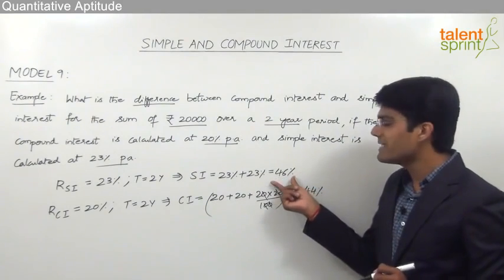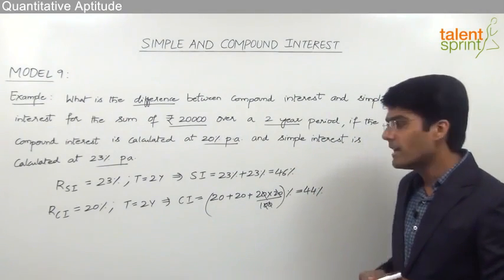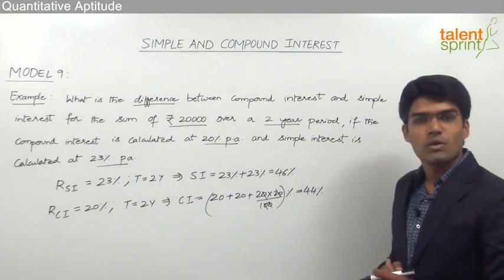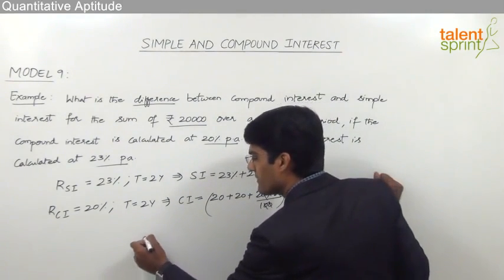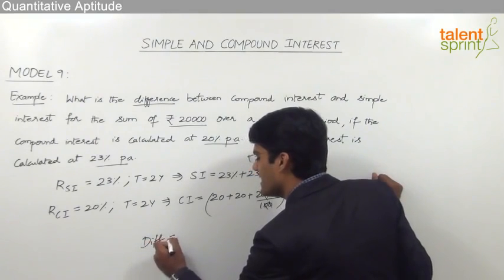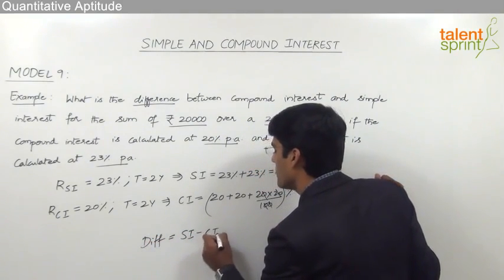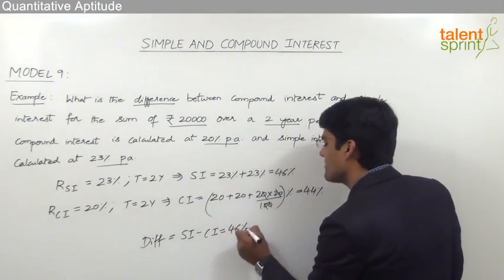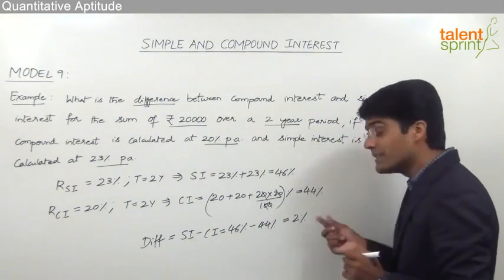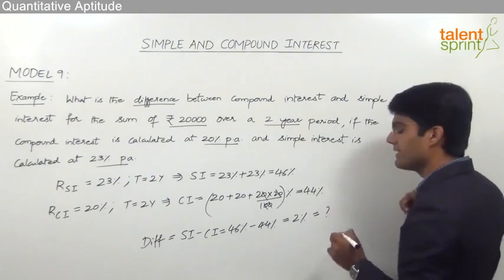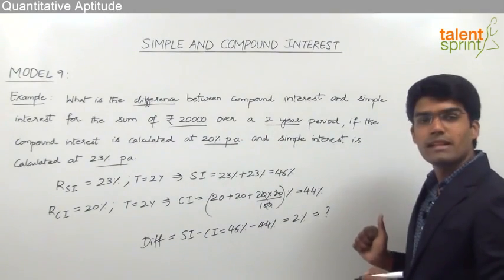the total simple interest that is generated is 46% and the total compound interest is 44%. And we are supposed to find out the difference between these two. So we can say that the difference, that is SI minus CI, would be equal to 46% minus 44%, that is equal to 2%.